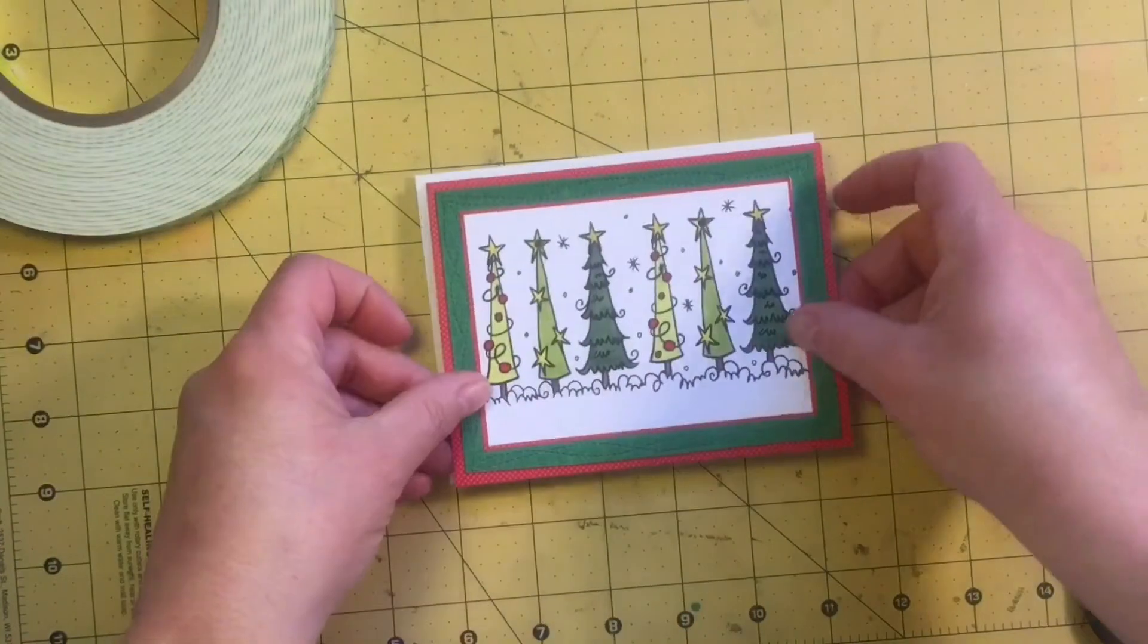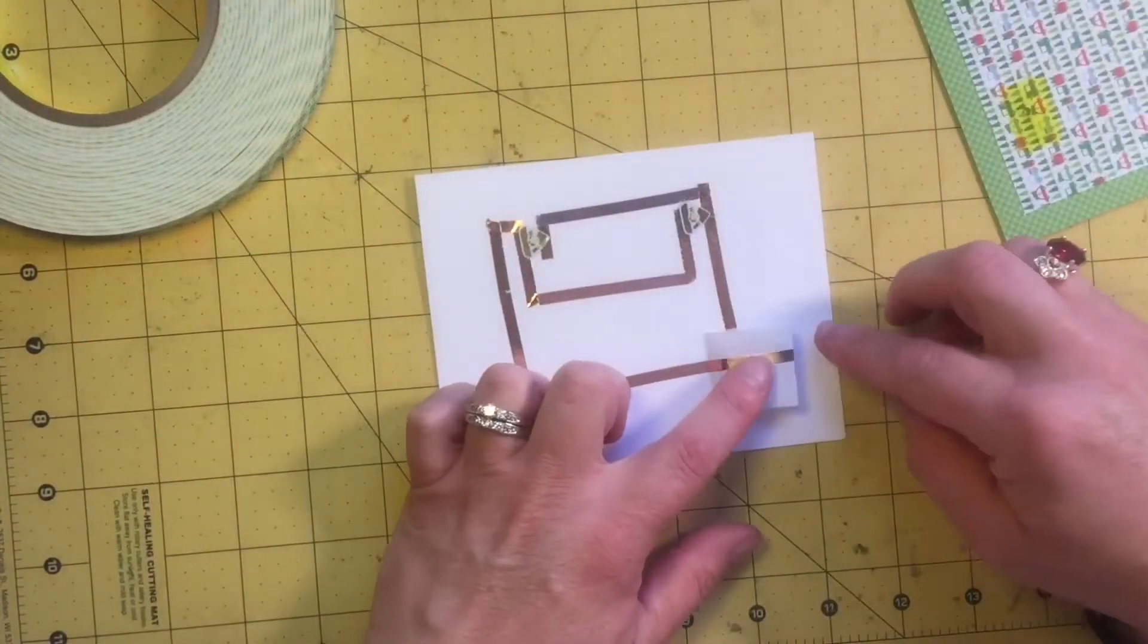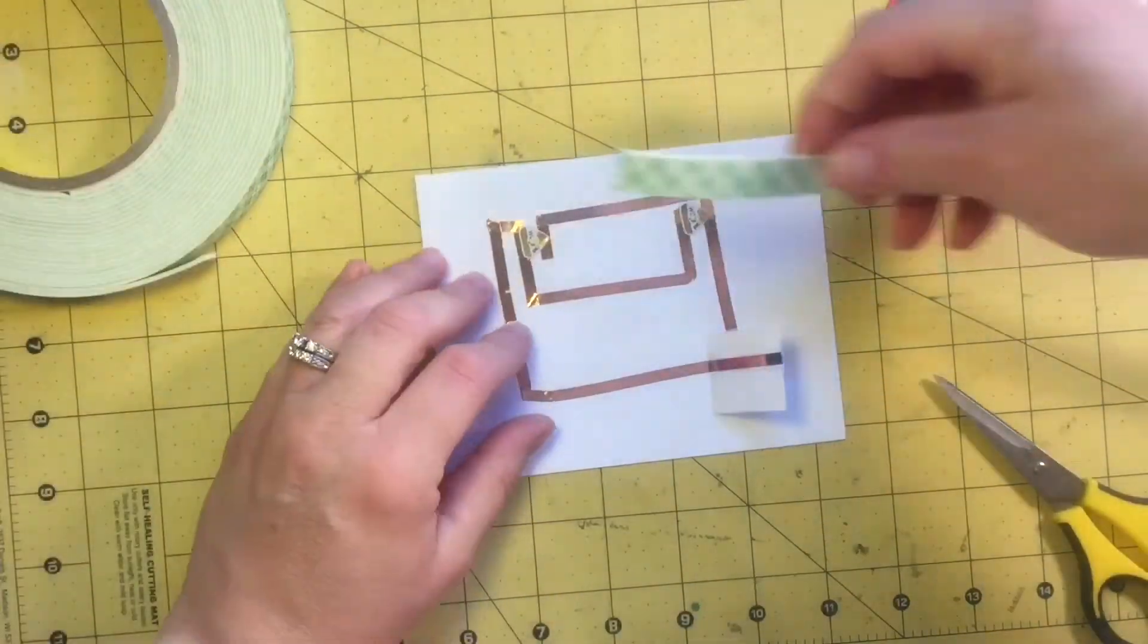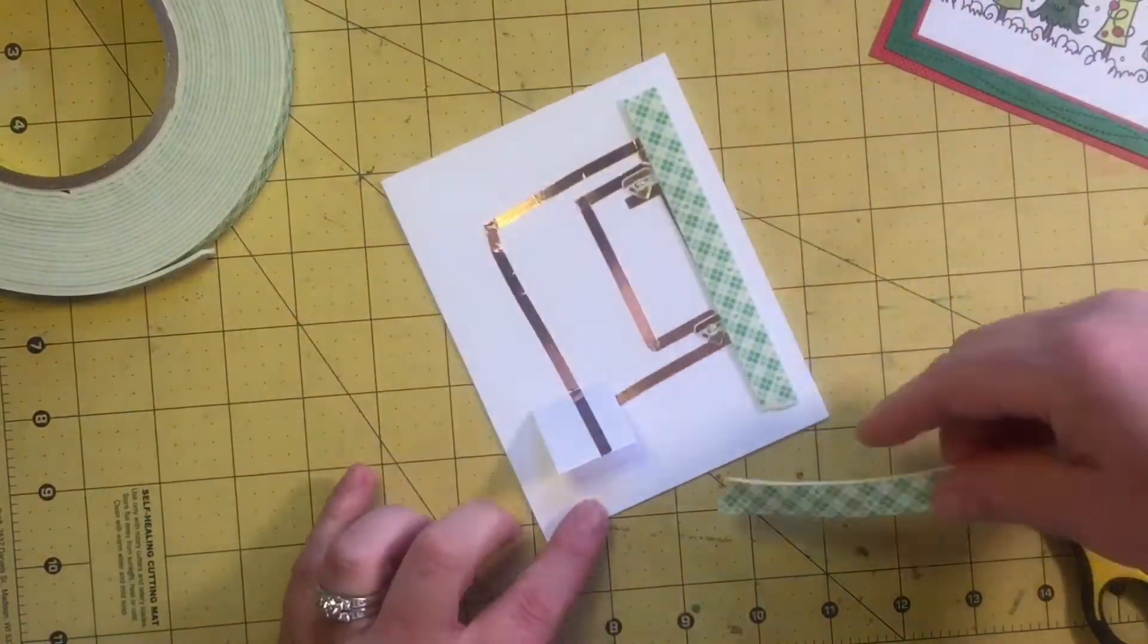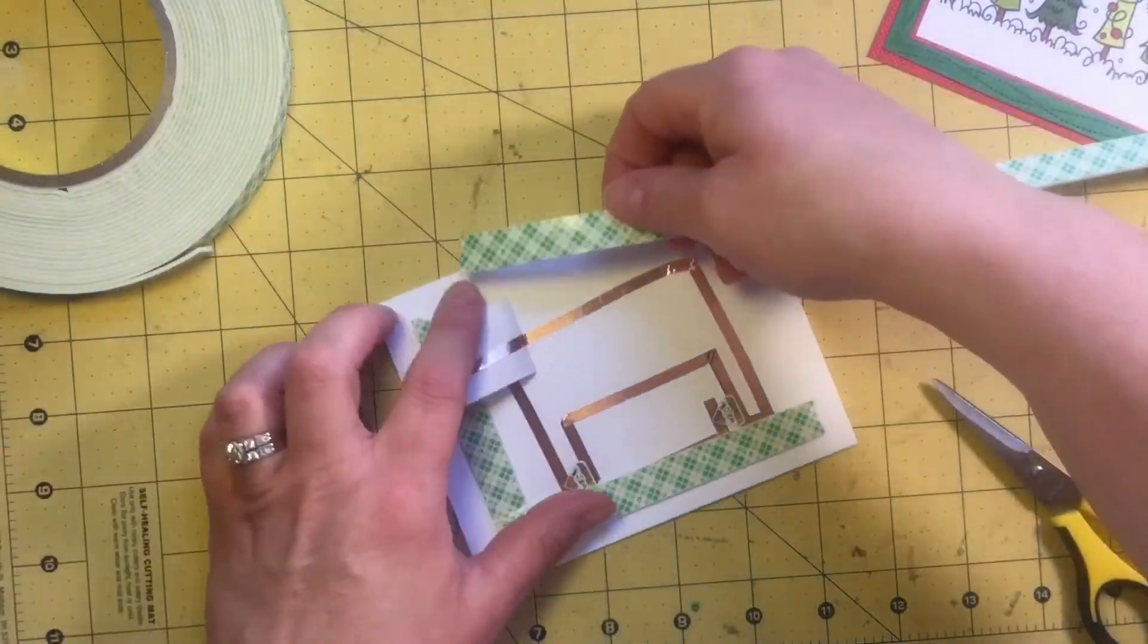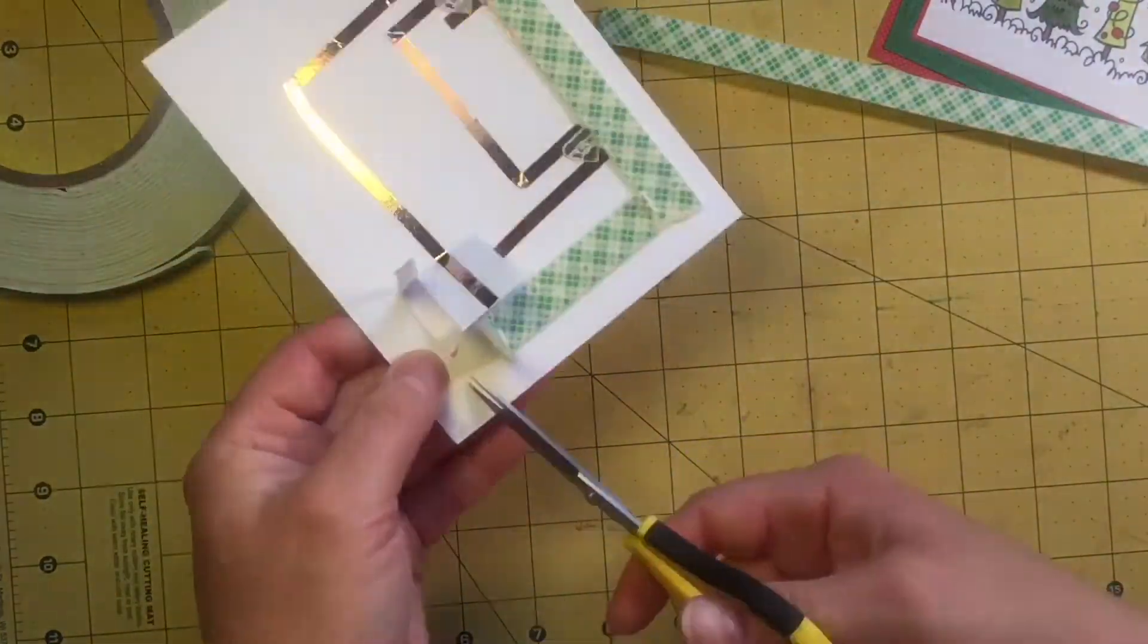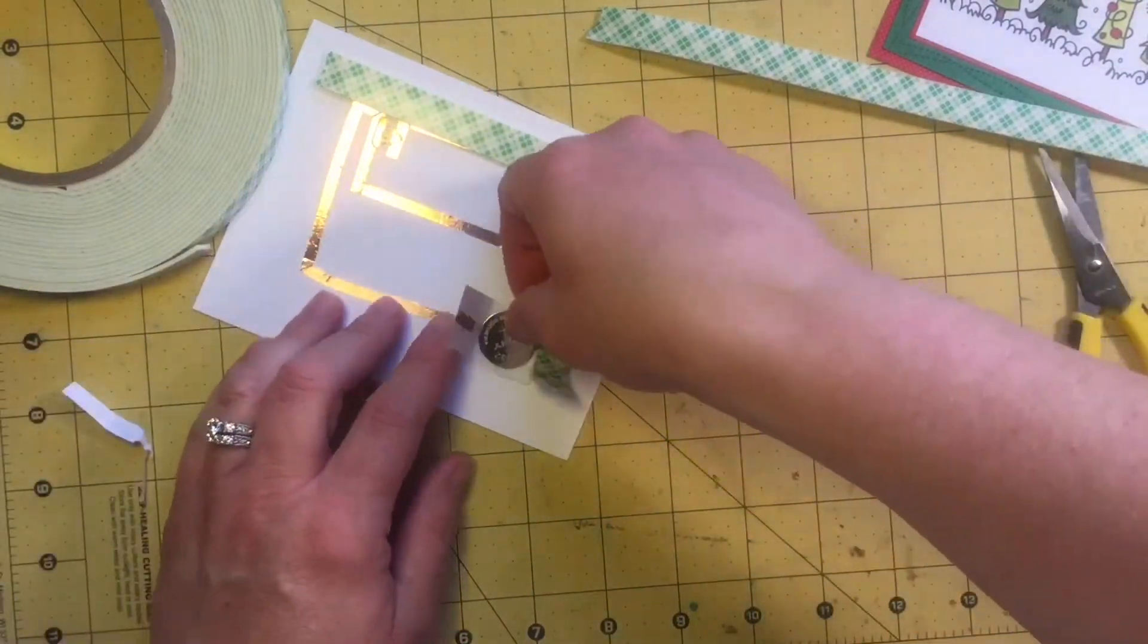Now we're going to start building up the card with foam tape. You need to have enough layers of foam tape to be taller than the thickness of that battery. Because if you don't, when you put your top panel down, the weight of the cardstock will keep pressure on that battery and it won't shut off. Your battery will go dead. So it'll stay on and you won't be able to push it as you need it.